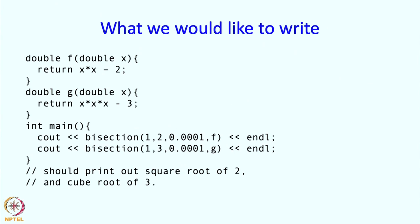So in short, this is what we would like to write. We define our function f and our function g, and in the main program we pass f as an extra argument to bisection, which should then print the square root of 2. Similarly, we pass g to bisection, which should then print the cube root of 3.